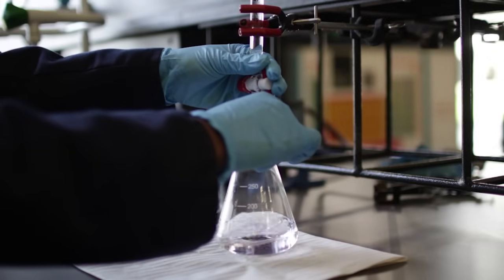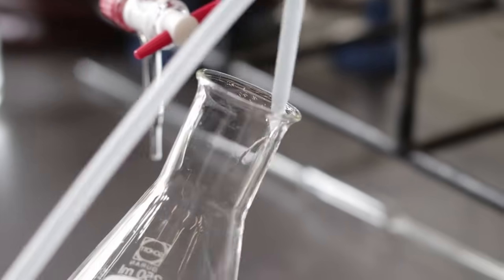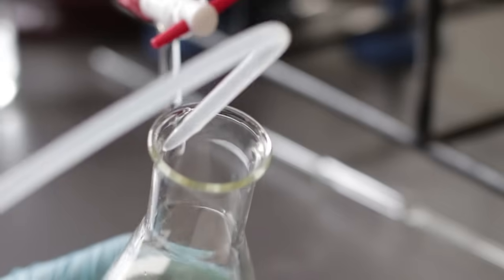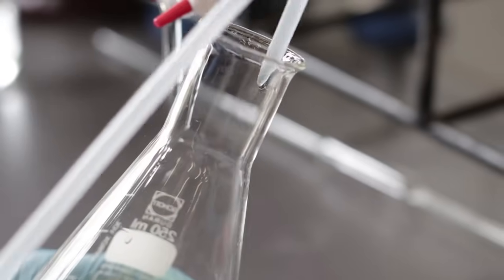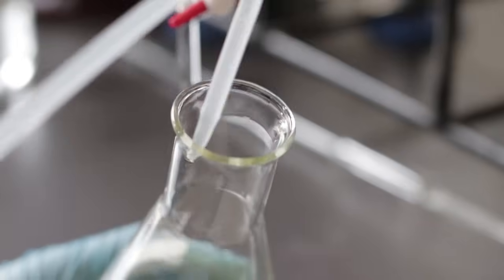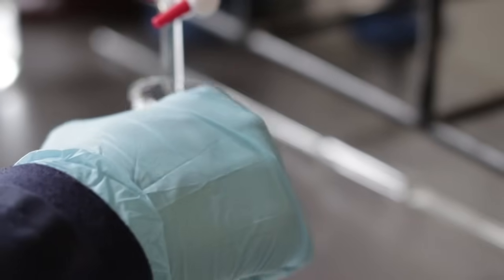When approaching the endpoint volume, a good habit is to wash the sides of the conical flask with distilled water from a wash bottle. As when swirling, the side of the conical flask will touch the tip and some of the titrant will stick to the walls of the flask.